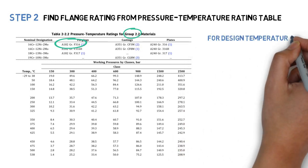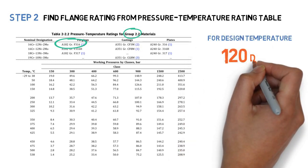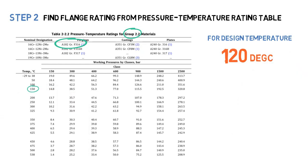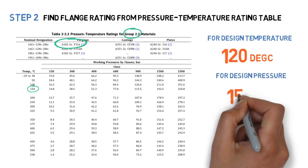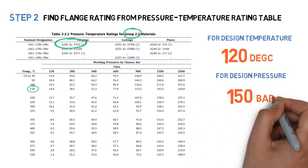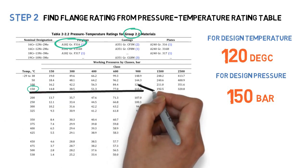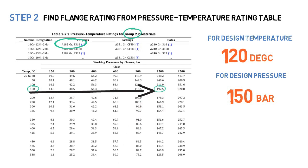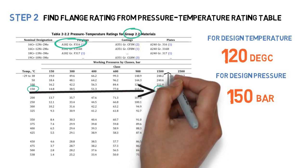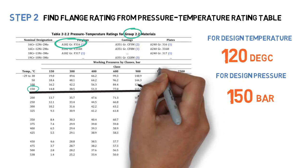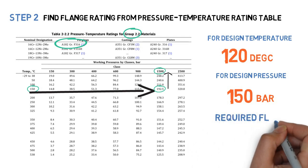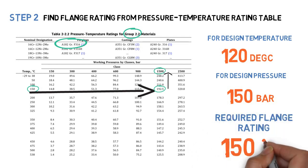Step 2: Find the flange rating from the pressure-temperature rating table. For design temperature 120 degrees Celsius and design pressure 150 bar, the required flange rating is Class 1500.